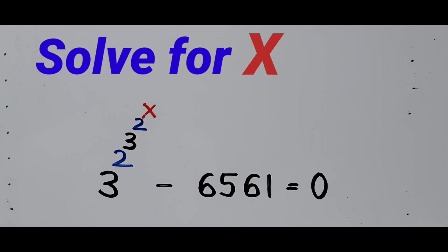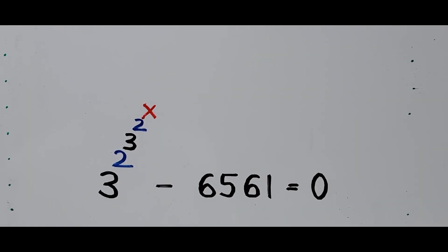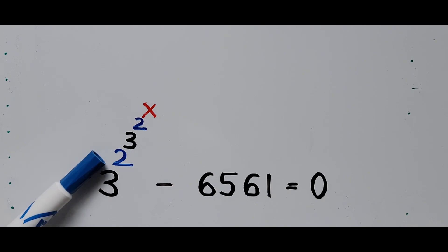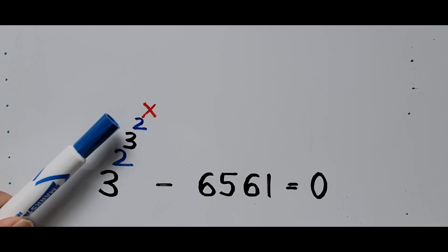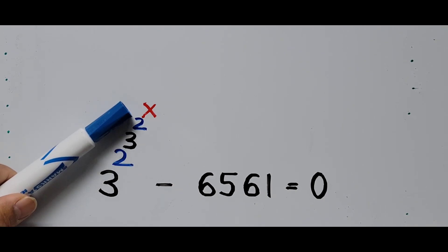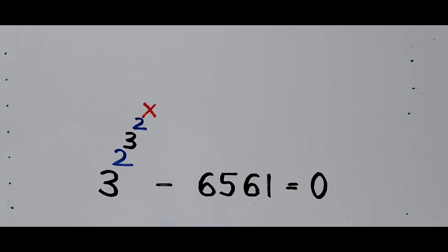Hello everyone, welcome to Cassiano Easy Math. This video is about solving another exponential equation. The problem is this nested exponent: 3 raised to power 2, raised to power 3, raised to power 2, raised to x, minus 6561 equals 0.